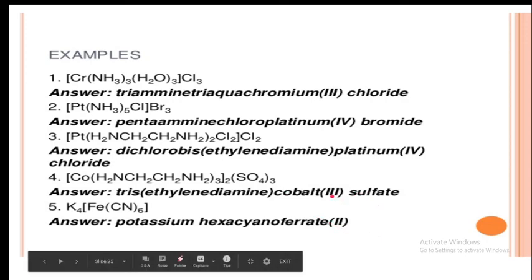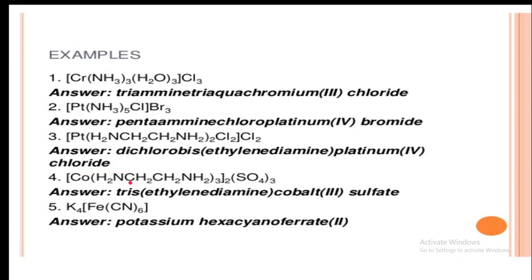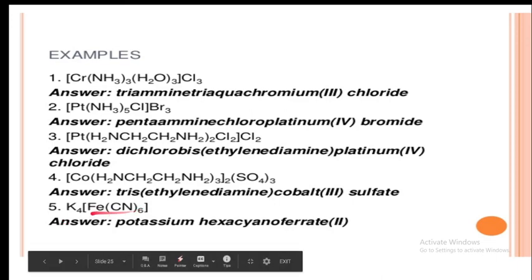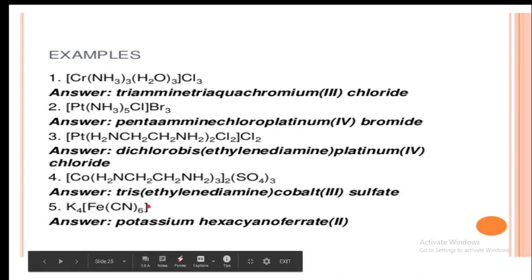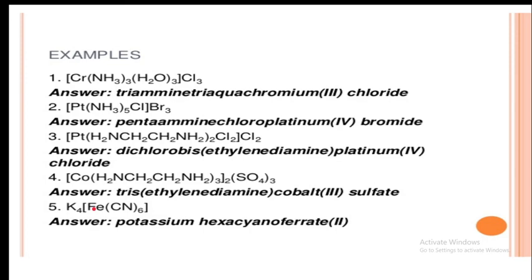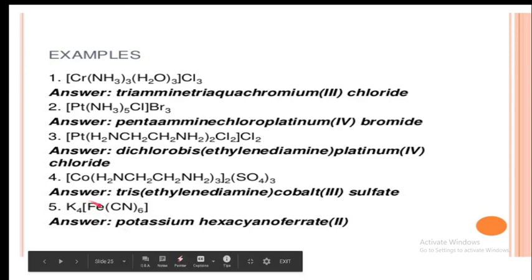Example 4: K4[Fe(CN)6]. The cation is potassium (K⁺). The complex anion contains iron and cyanide (CN⁻) ligands. CN⁻ is cyano; there are six cyano ligands so the prefix is hexa. Iron in a complex anion uses the Latin name ferrate. The oxidation state of iron: minus 1 times 6 plus 4 (from K4) gives the calculation for x. The full name is potassium hexacyanoferrate(II).